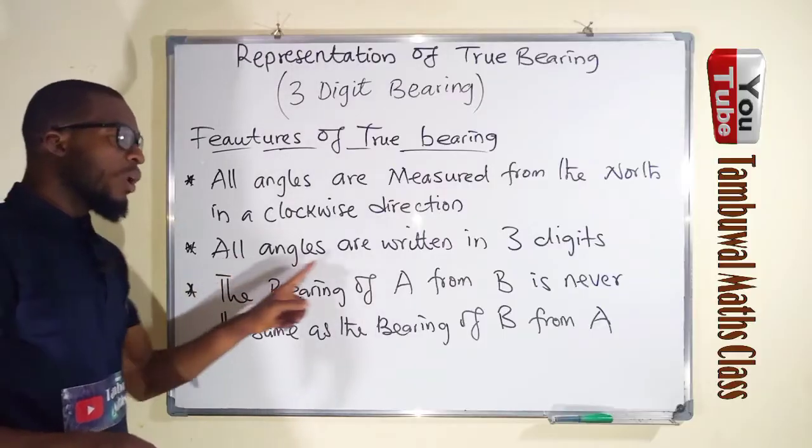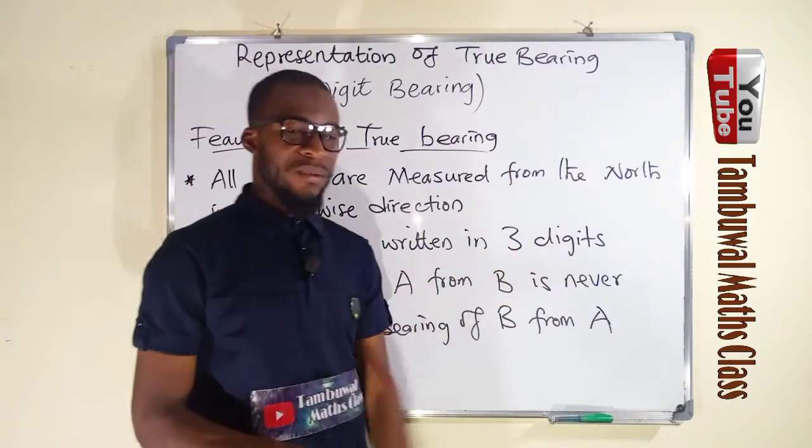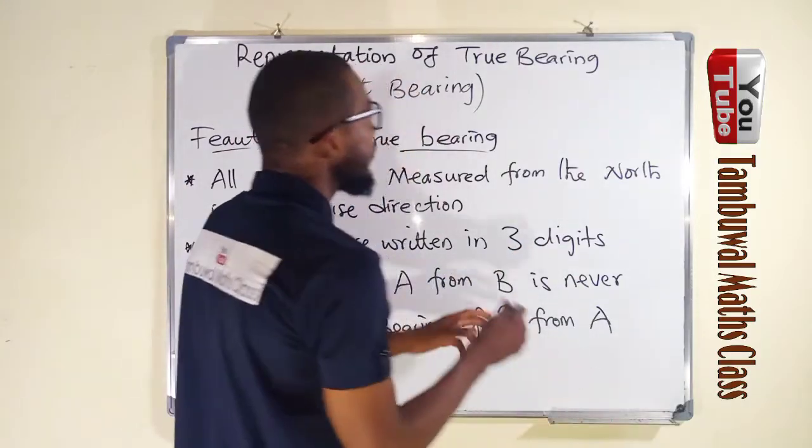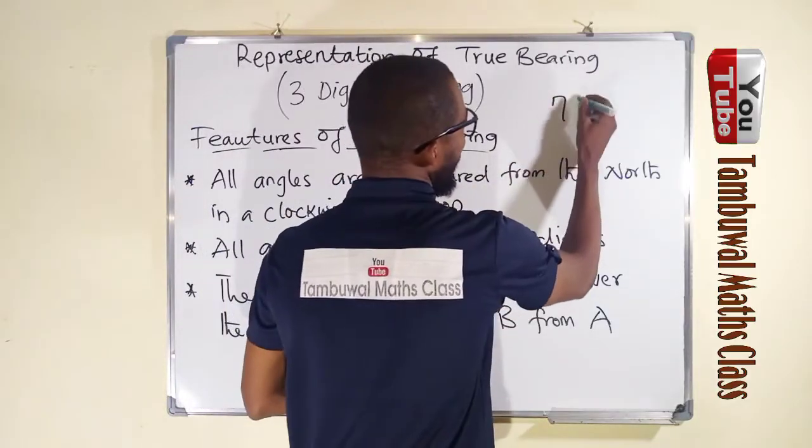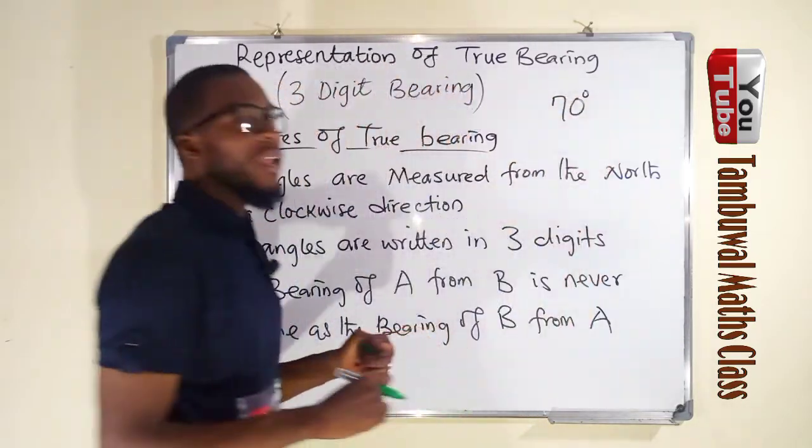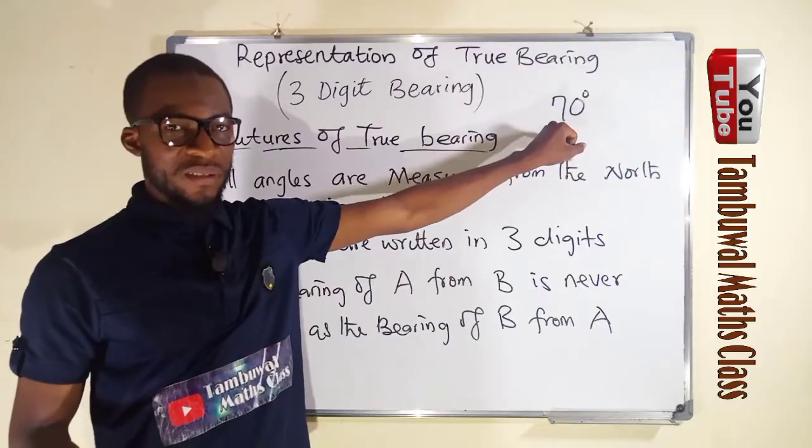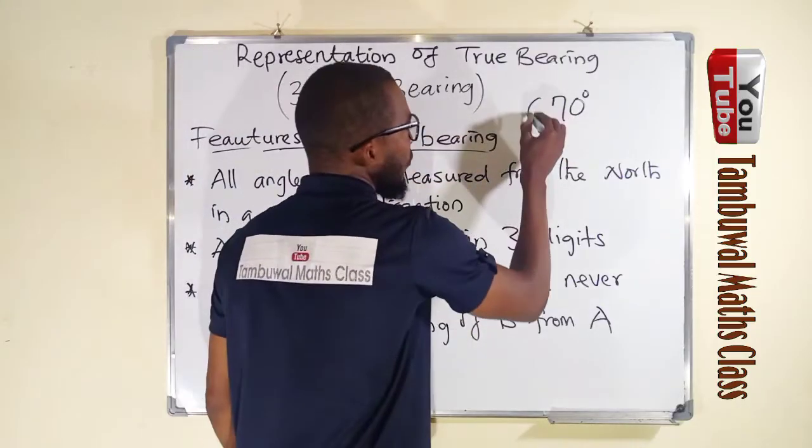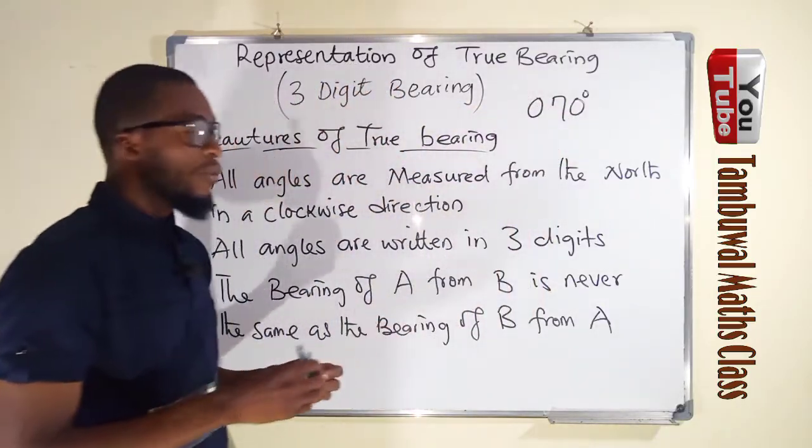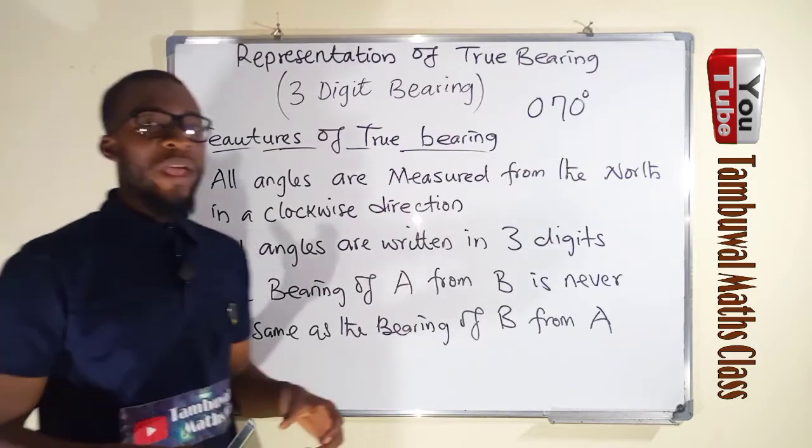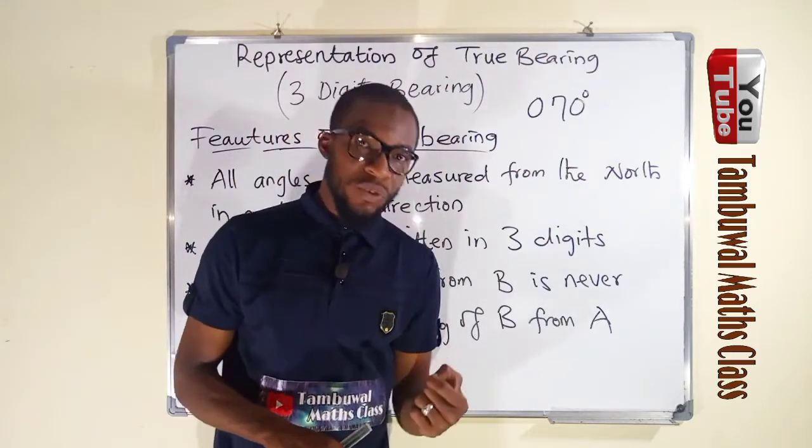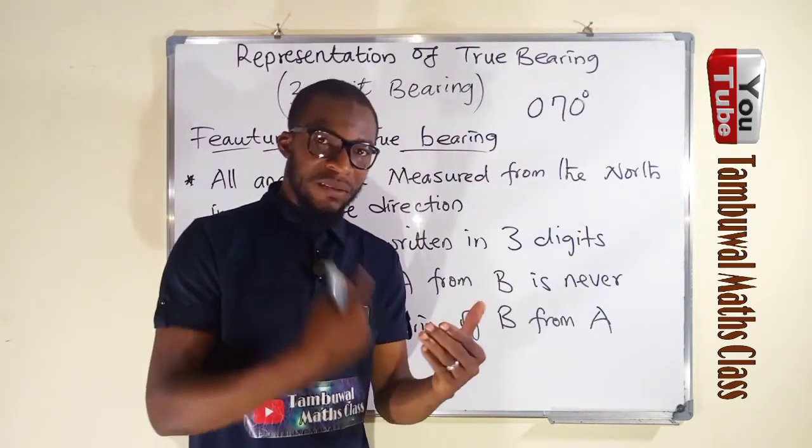Number two, all angles are written in three digits. Suppose you have 70 degrees. In true bearing, we don't write 70 degrees as this. Rather, we add 0 before 70. So any angle that is less than 100, 99, 67,